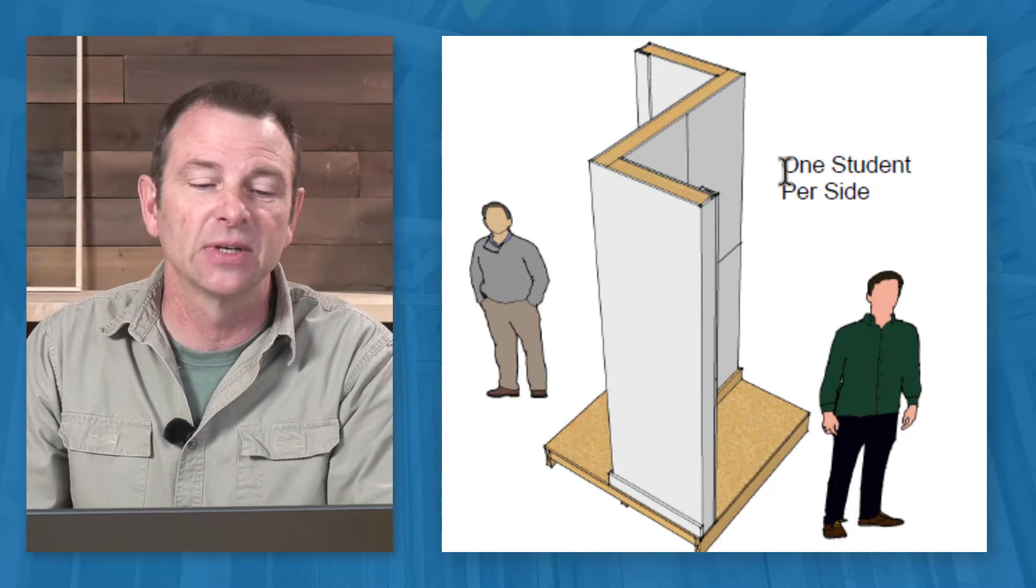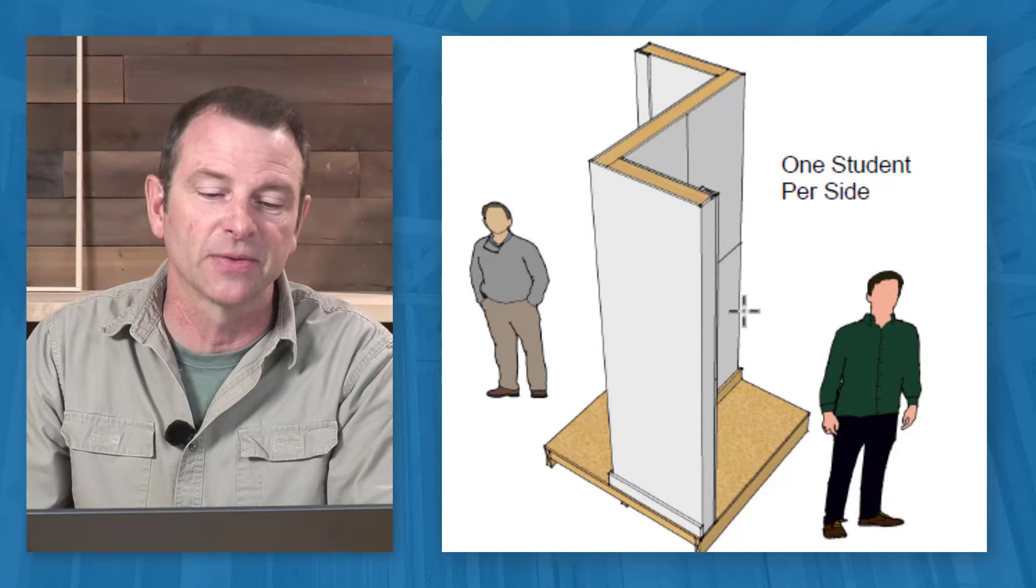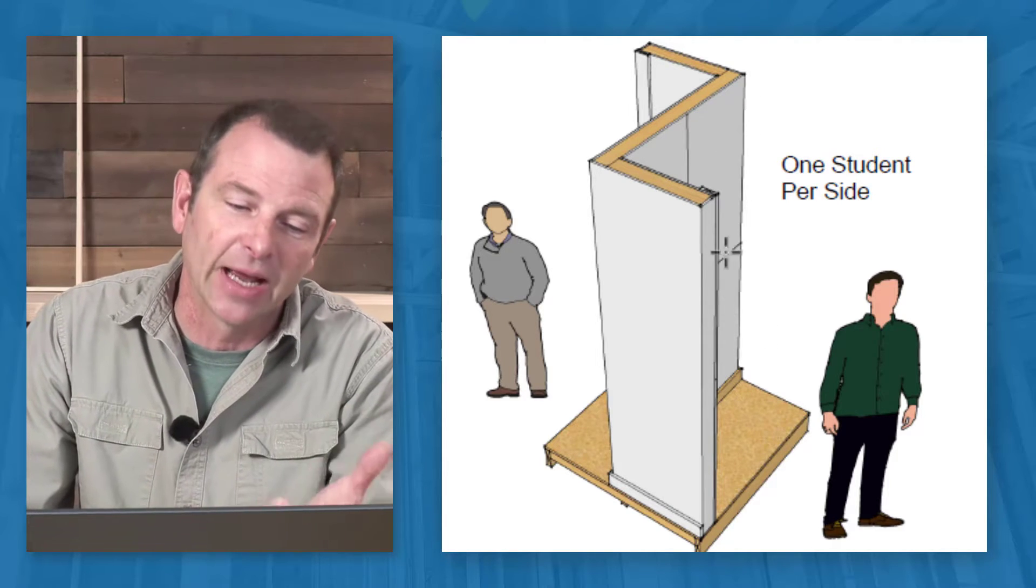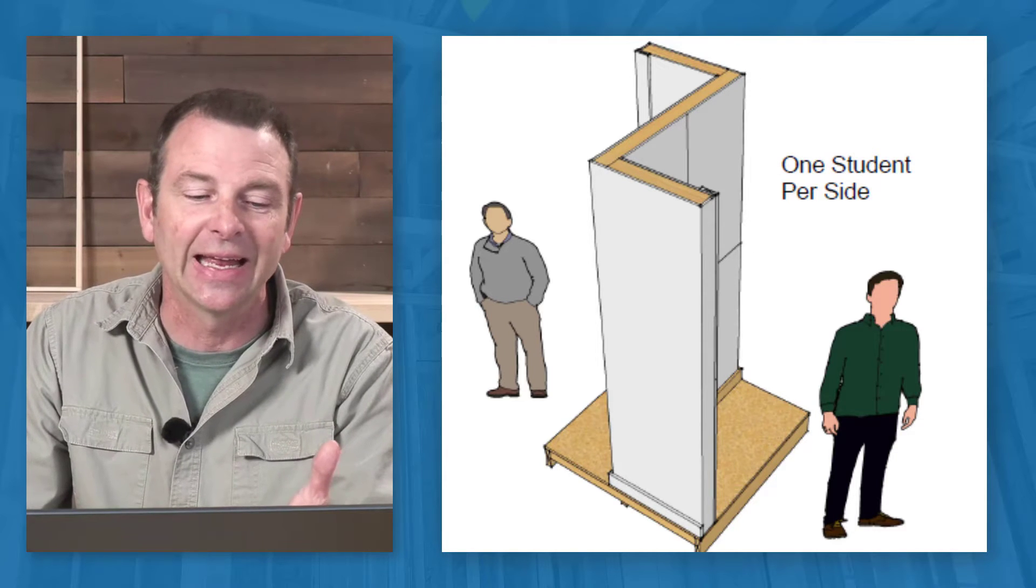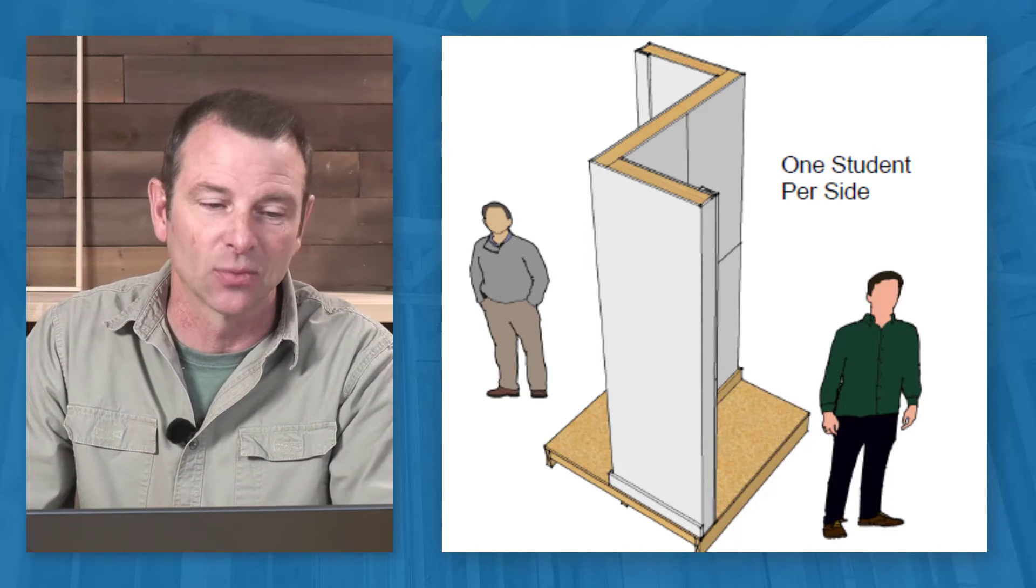So this student here would be responsible for one, two, three wall surfaces as well as they would have an inside corner, some outside corners, and some trim boards that they could work with.